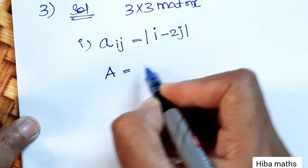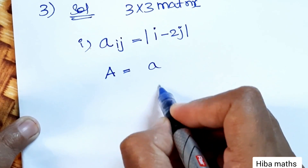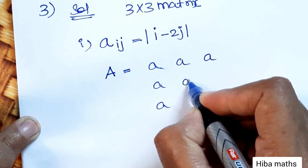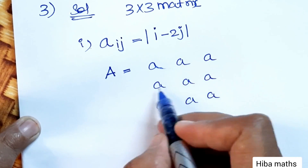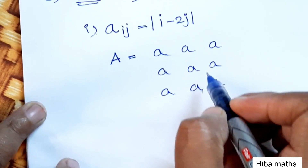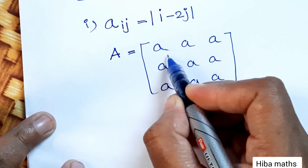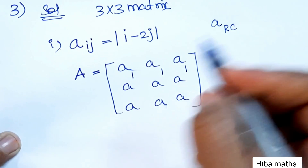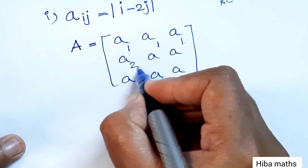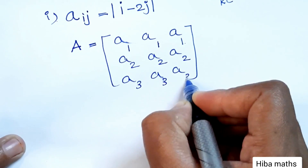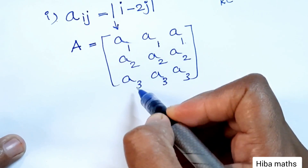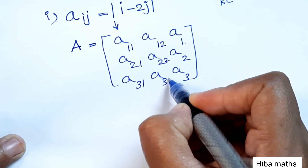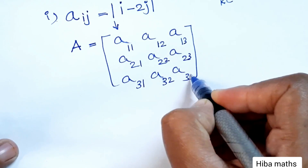Now, the given matrix A has 3 rows — row 1, 2, 3 — and 3 columns. The rows are indexed 1, 1, 1 for the first row; 2, 2, 2 for the second row; and 3, 3, 3 for the third row. The columns are indexed 1, 1, 1 for the first column; 2, 2, 2 for the second column; and 3, 3, 3 for the third column.